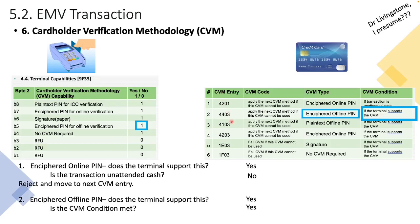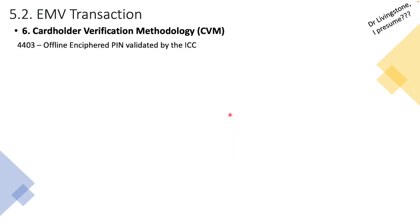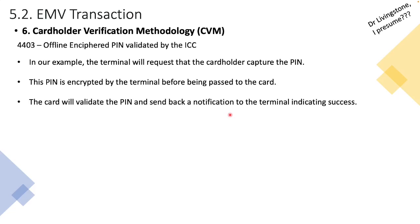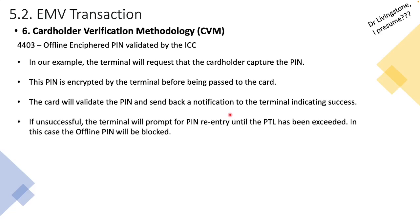So we can now use CVM entry two — 4403 — for this transaction. The terminal will request that the cardholder capture the PIN, the terminal encrypts it and passes it to the card, the card validates the PIN, and it sends a response back to the terminal confirming the PIN matches the stored PIN. If the PIN was not successful, the terminal will ask the user to re-enter the PIN, continuing until the PIN trial limit is exceeded, at which point the offline PIN will be blocked.